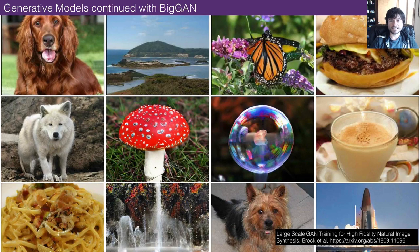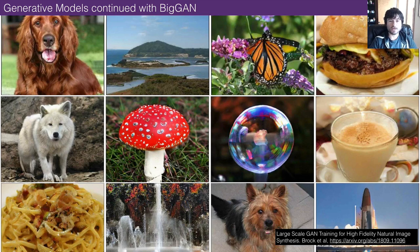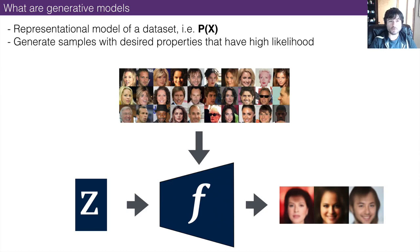This is the second session in the introduction to generative models with Runway. Last week we introduced generative models — we talked about GANs, autoencoders, and some of their properties. This week we're going to continue by introducing a particular GAN called BigGAN, one of the more infamous GANs around, introduced by DeepMind about a year and a half ago. We'll use it to elaborate on finer details and properties of GANs. If this is your first time, I'd suggest looking back at the introduction video.